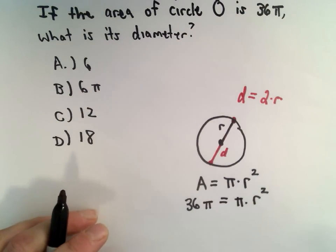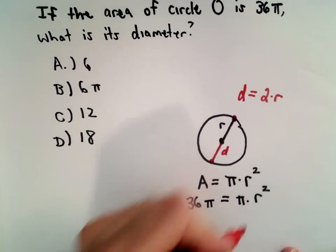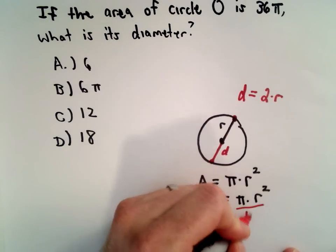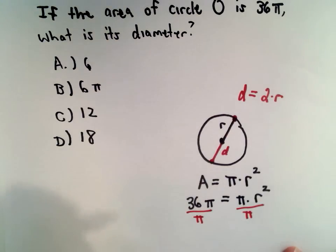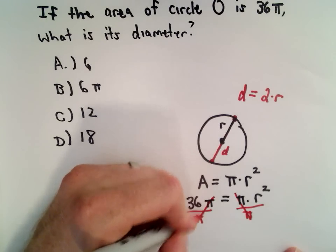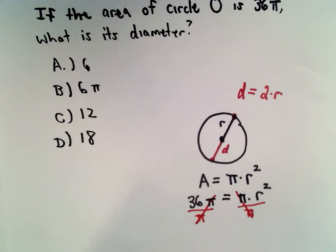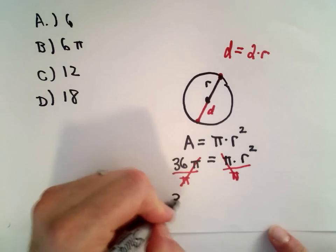So I'm going to do this algebraically. You can also think what number squared would give me 36—that's ultimately what we're going to do. So I want to solve for r. To get rid of the π, since I'm multiplying by π, I can divide both sides by π. So π divided by π is just 1. So now we've got 36 equals r².